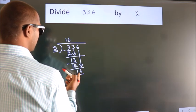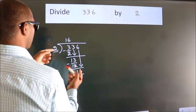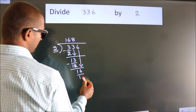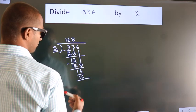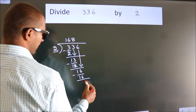When do we get 16 in the 2 table? 2 eights are 16. Now we subtract. We get 0.